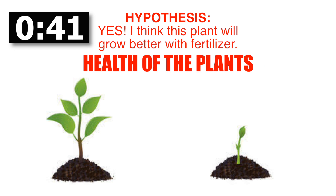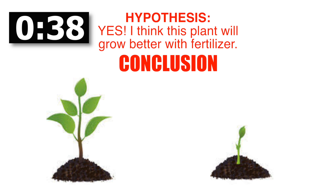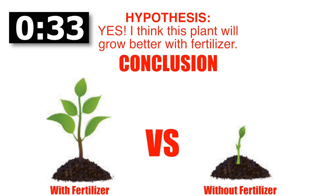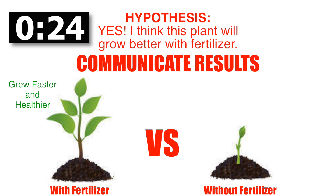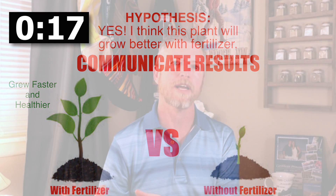I record any observations — the health of the plant, the color — and then at the end I come up with a conclusion. Did this plant grow better with fertilizer versus the one that did not? If it did, I can say with certainty my hypothesis was correct based on the data I received. Then I want to communicate that with others — telling them I verified that this fertilizer affects the health and growth of the plant, sharing my results and inviting others to verify my findings with their own experiment.